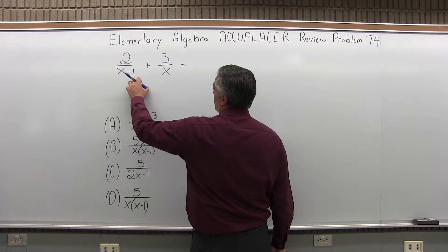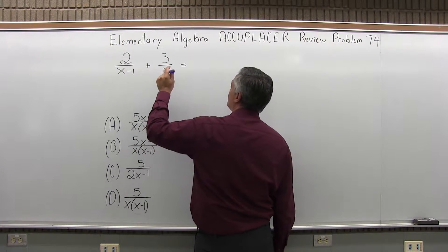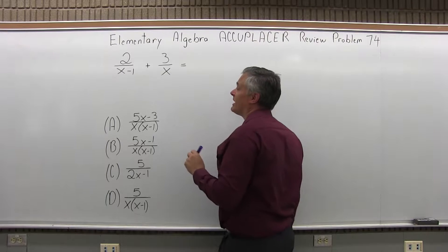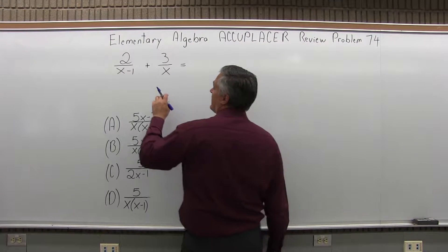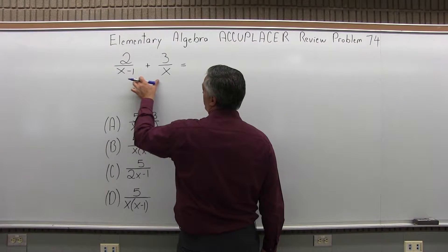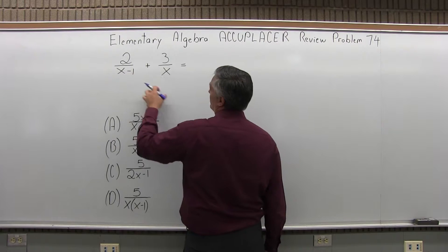So one denominator is x minus 1, the other is just x, and it would be so nice to just add a minus 1 to both, but I can't do that. What I'm going to have to do is make my common denominator x times x minus 1.